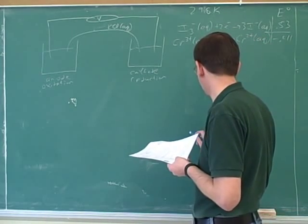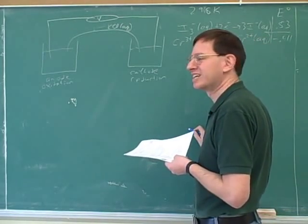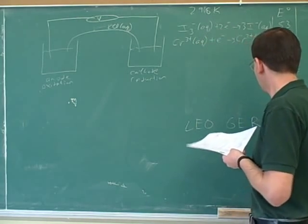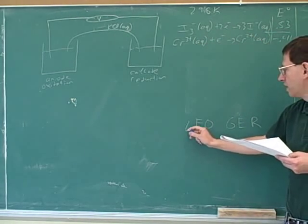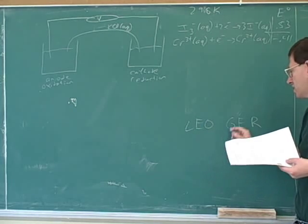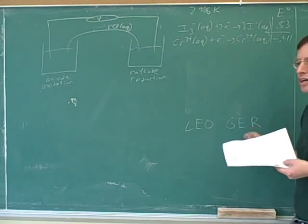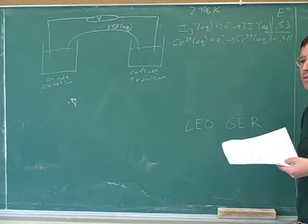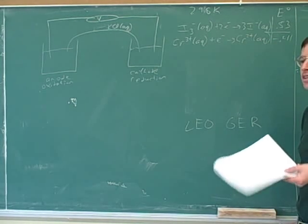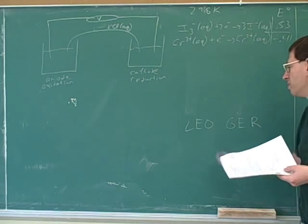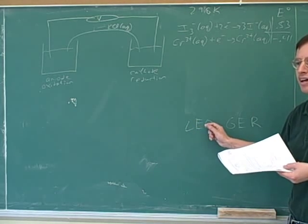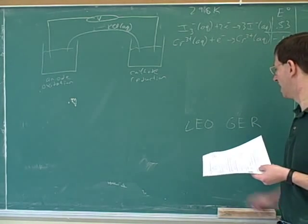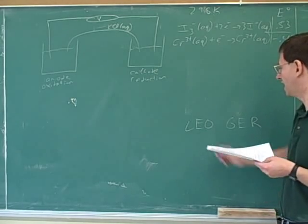There's another good mnemonic there that maybe you've heard. Leo the lion goes ger. Loss of electrons is oxidation. Gain of electrons is reduction. That's better than oil rig because oil rig doesn't tell you what you're losing or what you're gaining. This tells us loss of electrons is oxidation and gain of electrons is reduction. I like it also because it's another animal mnemonic to go with anox red cat.